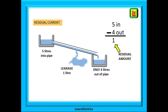Now suppose that our piece of pipe starts to corrode and a small rust hole develops. Water starts to leak out — not a lot to begin with, just a few drips, but over time it gets worse. We put five litres in but only four litres comes out into the lower bucket. There is one litre of water missing. This one litre is the residual amount — the difference between what went in and what came out.